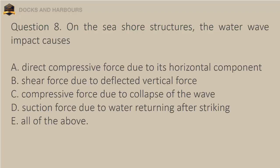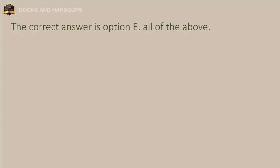Question 8. On the seashore structures, the water wave impact causes: A. Direct compressive force due to its horizontal component. B. Shear force due to deflected vertical force. C. Compressive force due to collapse of the wave. D. Suction force due to water returning after striking. E. All of the above. The correct answer is Option E: All of the above.